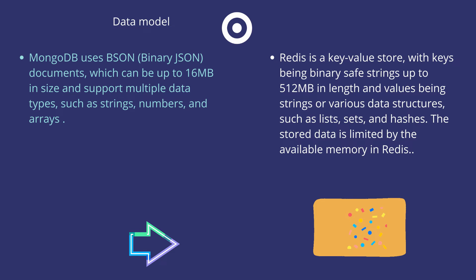MongoDB uses binary JSON documents which can be up to 16 MB in size. It supports multiple data types such as strings, numbers, and arrays. On the other hand, Redis is a key-value store with keys being binary-safe strings up to 512 MB in length and values being strings or various data structures such as lists, sets, and hashes. The stored data is limited by the available memory in Redis.